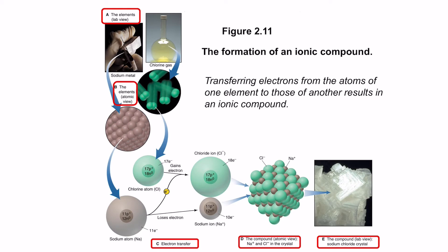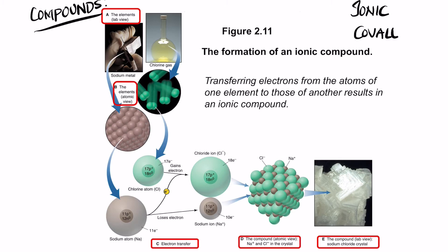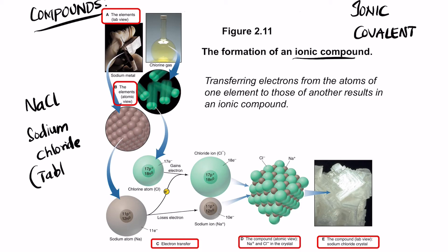Now let's go into the concept of bonding. Compounds are materials with different individual characteristics that collectively act as a single unit. Most compounds are classified into two types: ionic compounds or covalent compounds. The most common ionic compound is NaCl — sodium chloride, also known as table salt. Sodium is a soft metal and chlorine is a gas.